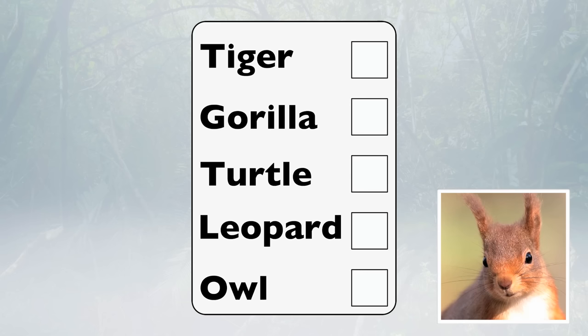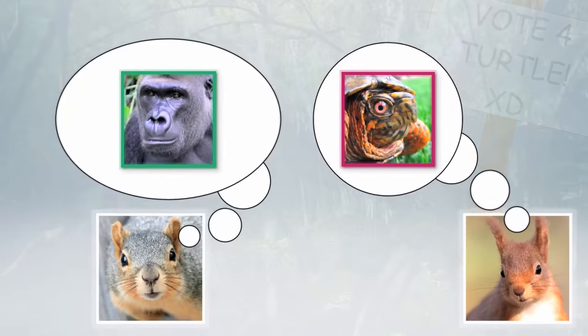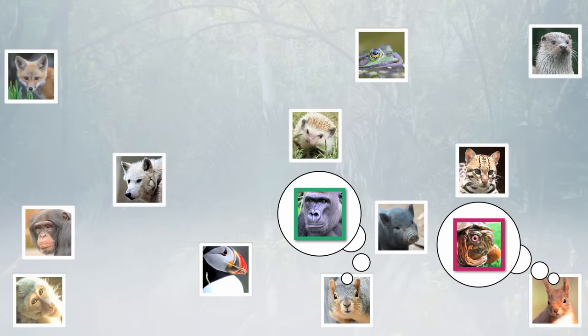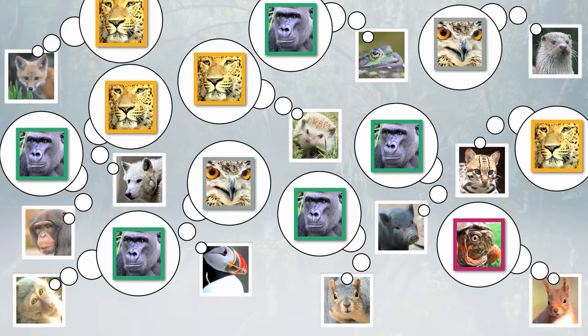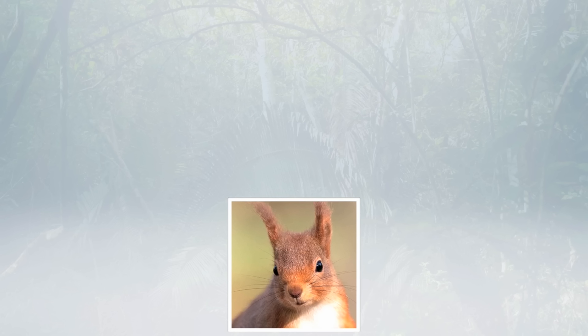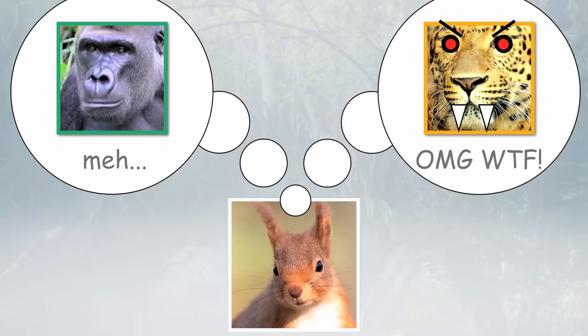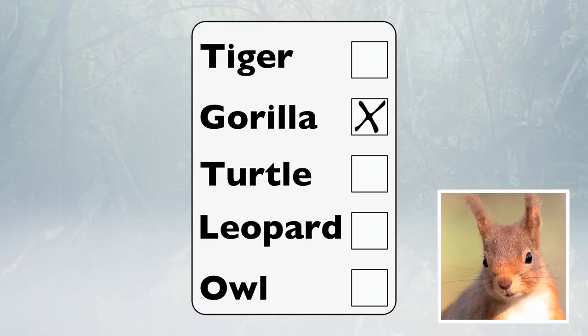Under first-past-the-post, Red Squirrel gets a ballot where he picks just one candidate. He really likes Turtle and even campaigned for him. However, he knows that his neighbor Gray Squirrel is voting Gorilla, and wonders who all the other animals will vote for. The debates on the Animal News Network only featured the big parties, so Red Squirrel thinks it'll be a close race between Gorilla and Leopard. While he's indifferent toward Gorilla, he's deathly afraid of Leopard. Because he can only pick a single candidate, he gives his vote to Gorilla to prevent Leopard from becoming king. This is strategic voting, and it's a necessity under first-past-the-post.